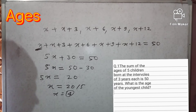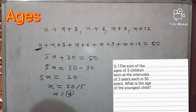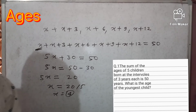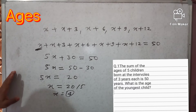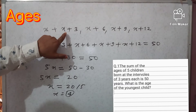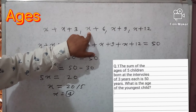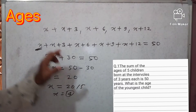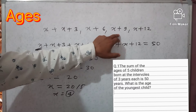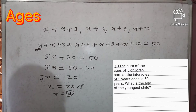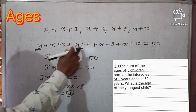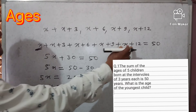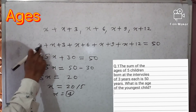Our answer is 4, so option C is the correct answer. Let's see once again: ages of five children born at intervals of three years each — first child x, second x plus 3, third x plus 6, fourth x plus 9, fifth x plus 12. Sum of 50 means we add all children: x plus (x+3) plus (x+6) plus (x+9) plus (x+12) equals 50.